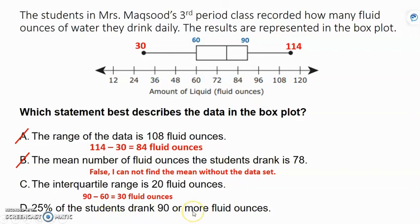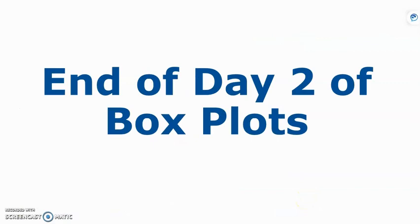25% of the students drank 90 or more fluid ounces. Okay, so 25% or 90 or more. So the end of the box is 90 or more. So we're on this side. Well, that's just the length of a whisker. Remember, a whisker is 25% or 1 fourth. So D is the correct answer. And that's the end of day two of box plots.